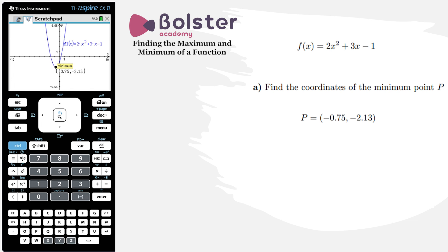So my minimum value is at minus 0.75, minus 2.13. The x-coordinate is telling me where my function has its minimum value. It has its minimum value at x equals minus 0.75.